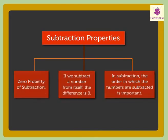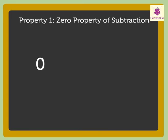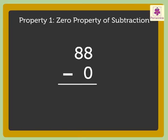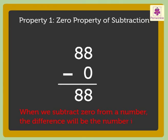Now, let us revise the subtraction properties. Property 1: 0 property of subtraction. In this property, 0 is always taken as the subtrahend. Let us take the numbers 88 and 0. When we subtract 0 from 88, we get the difference 88. This tells us that when we subtract 0 from a number, the difference will be the number itself.